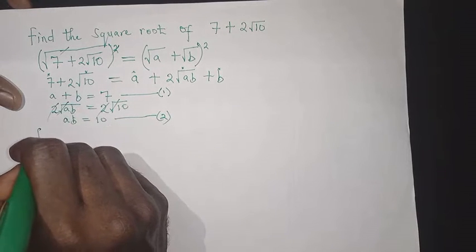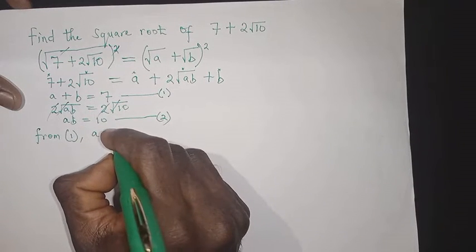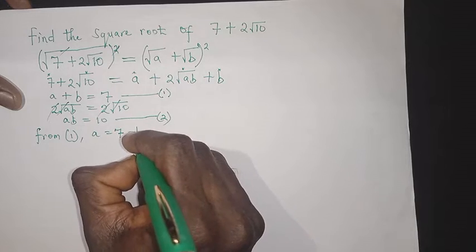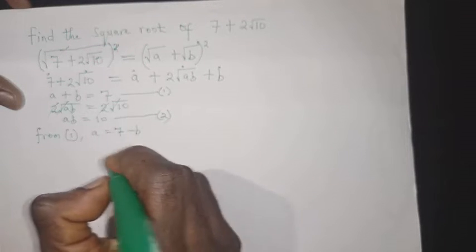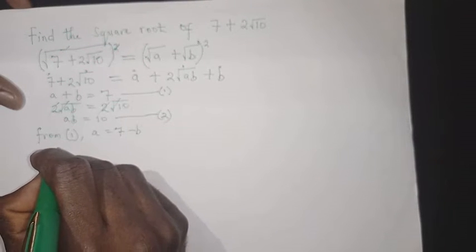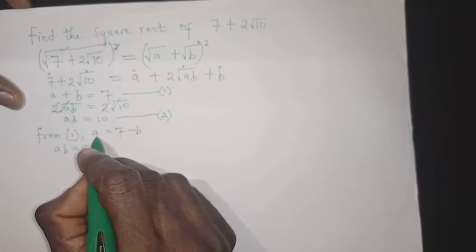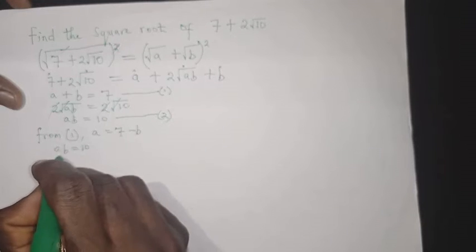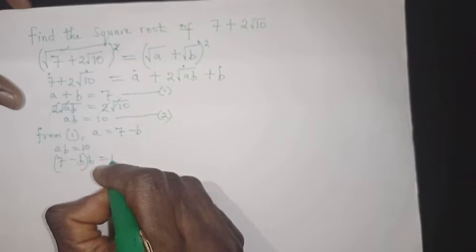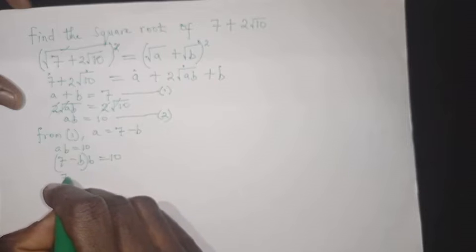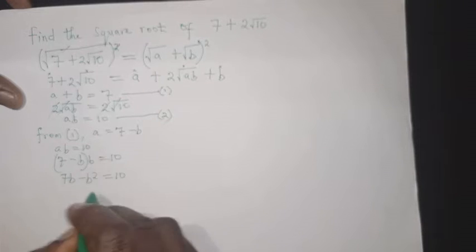Now I'm going to solve these two equations simultaneously. From equation 1, a equals 7 minus b. I'm going to substitute this expression into equation 2: ab equals 10 becomes 7 minus b times b equals 10.